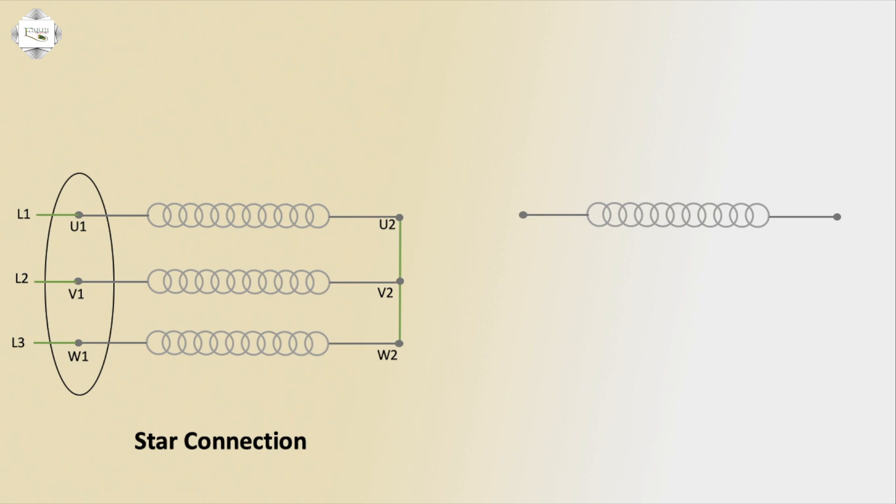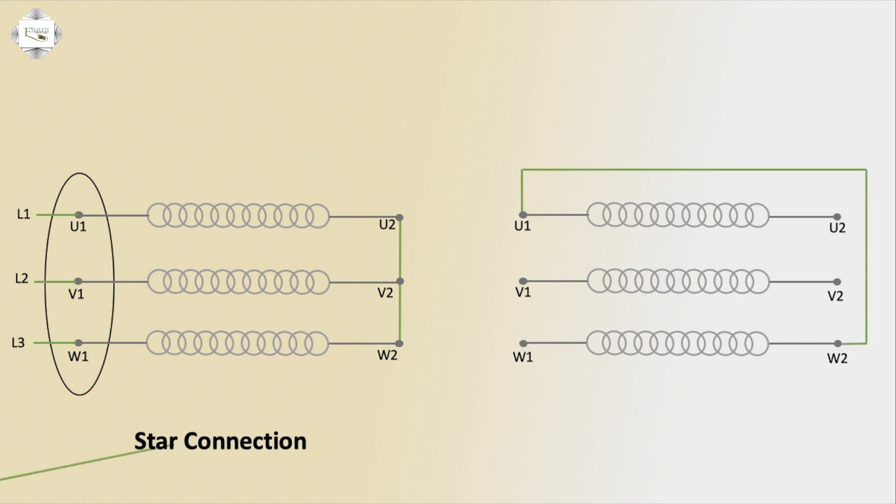For 3-phase delta connection, first U1 connects to W2. Then V1 connects to U2. Finally W1 connects to V2. This forms the delta connection.